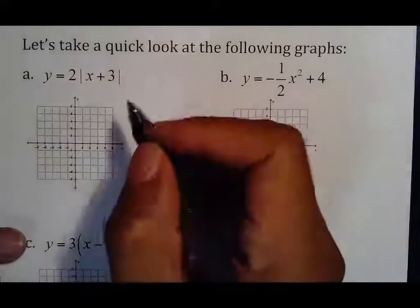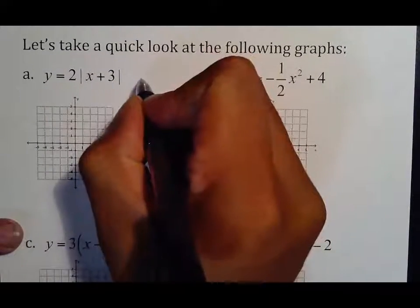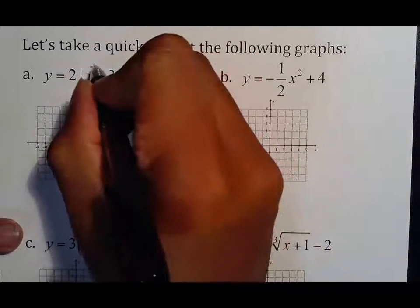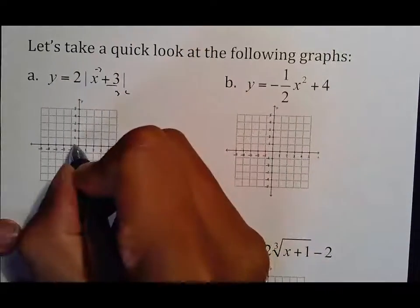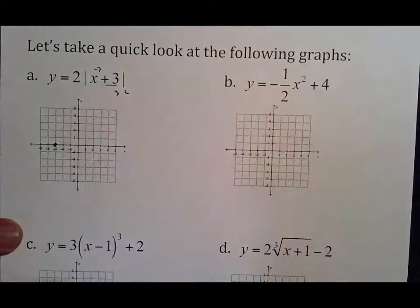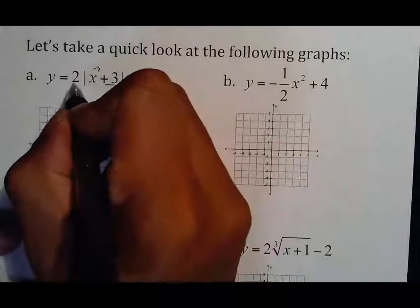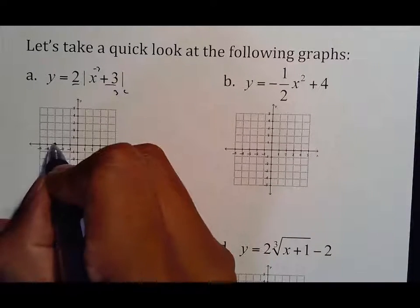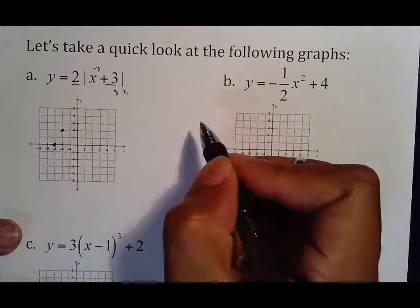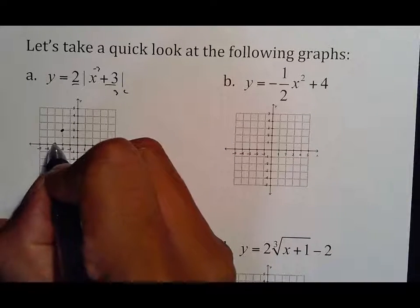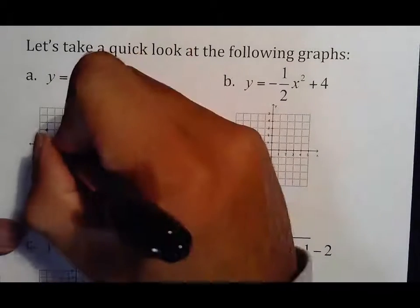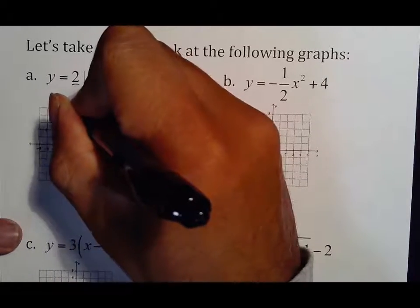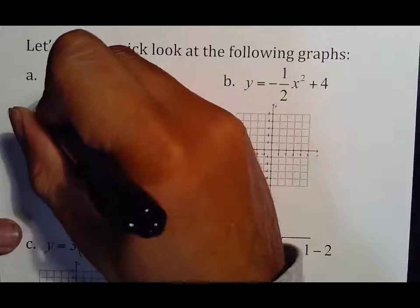So if we were going to do this, there's no outside number, so it does not move up or down, but this goes three left, one, two, three. When I go to make my home points, this number is going to affect me by instead of going one up, it's going to go two up. Instead of going one up, it's also going to go two up. So what it did to my V is it made it more narrow.